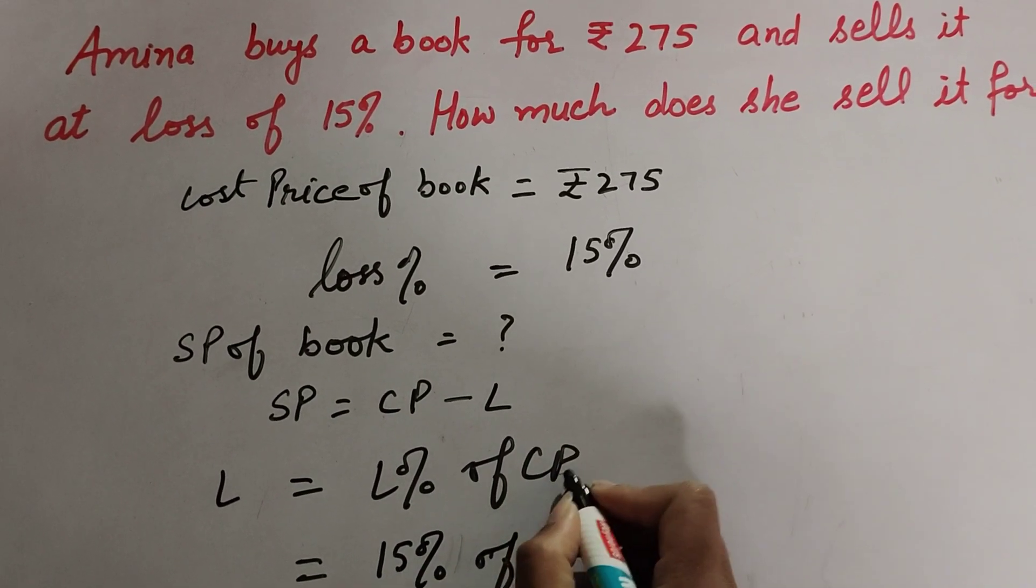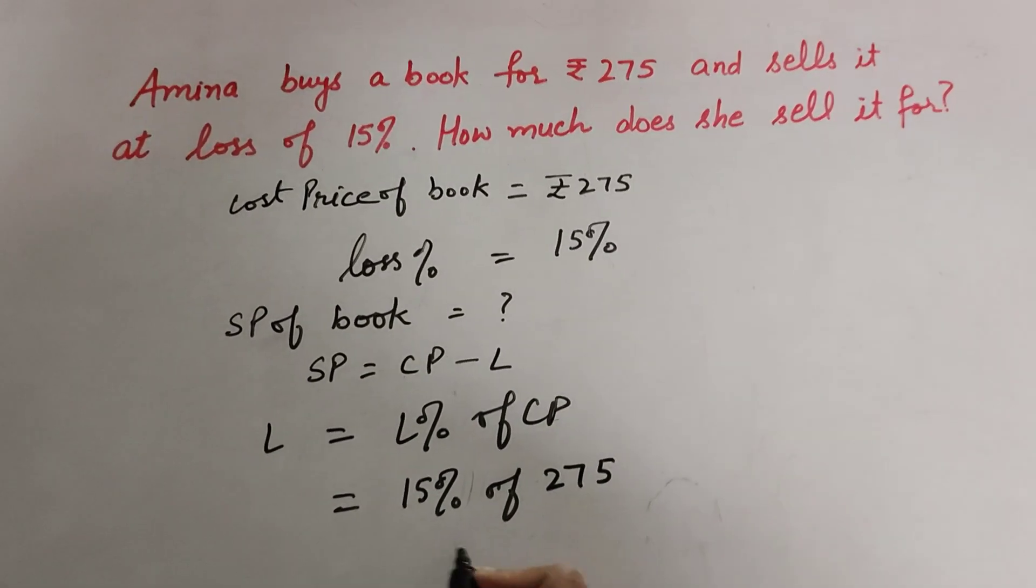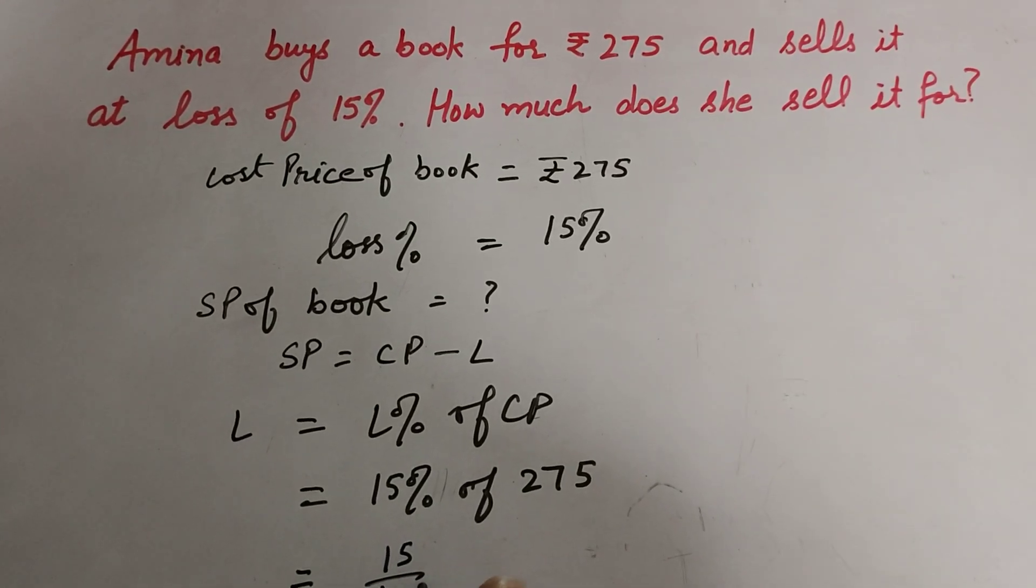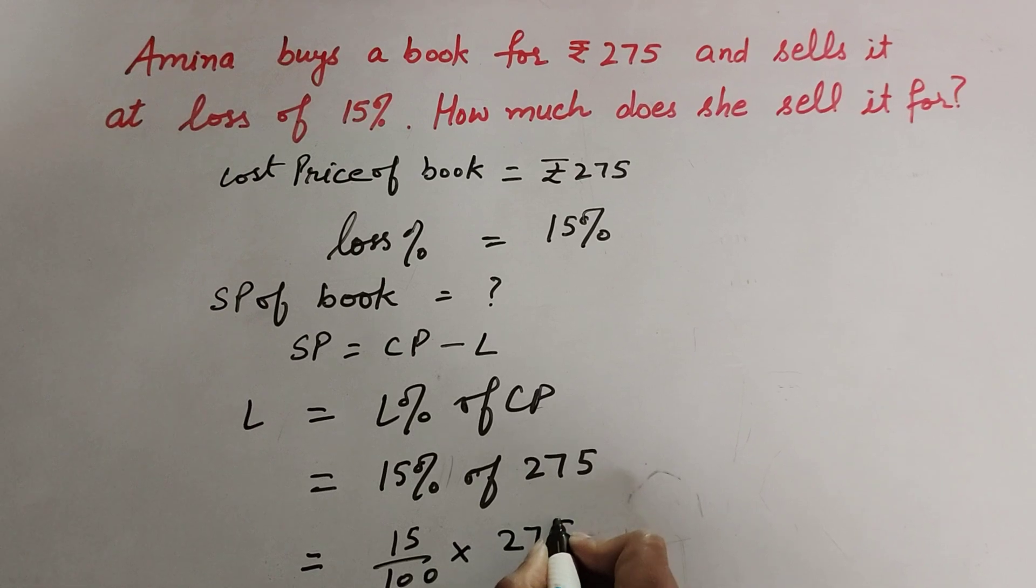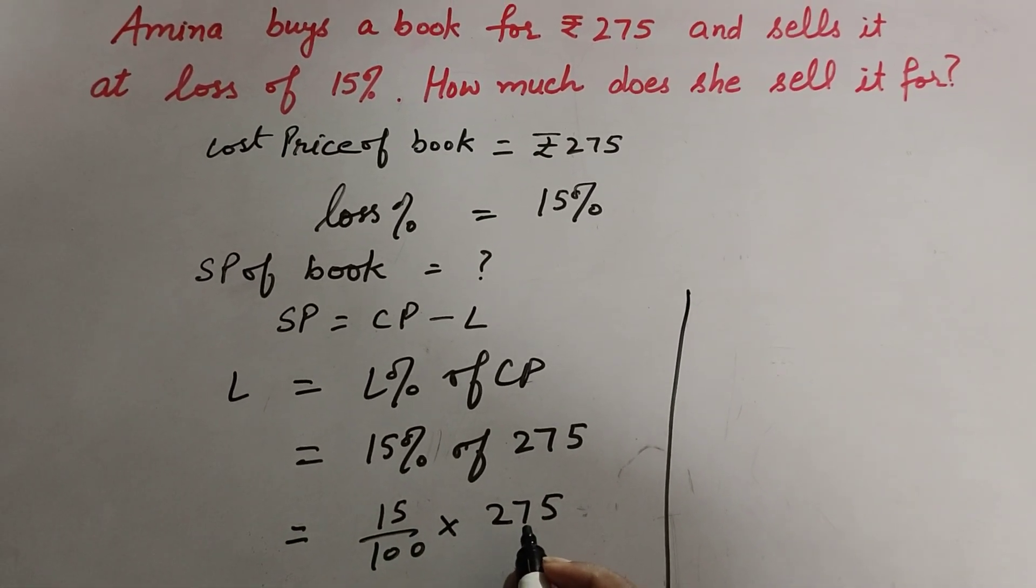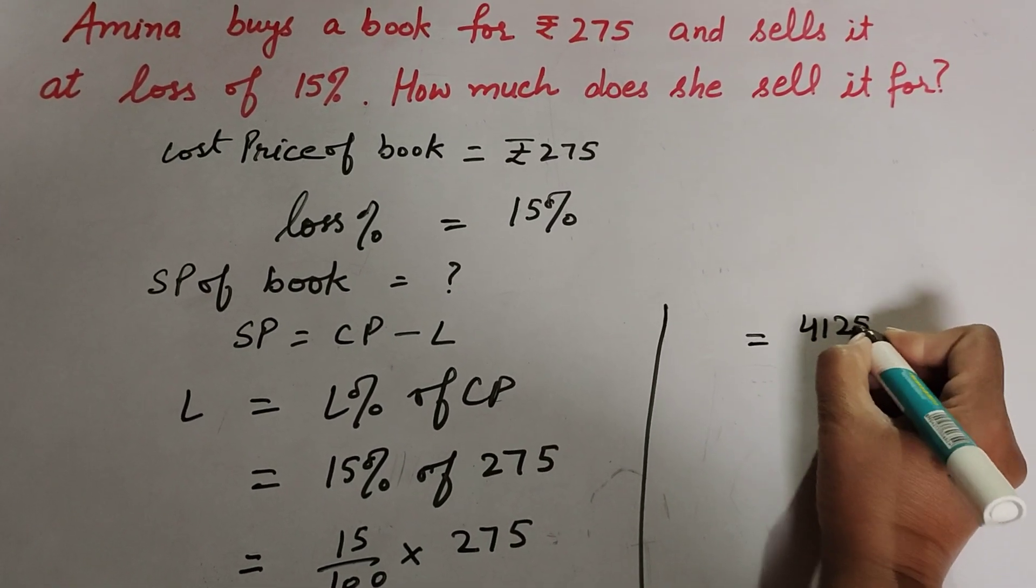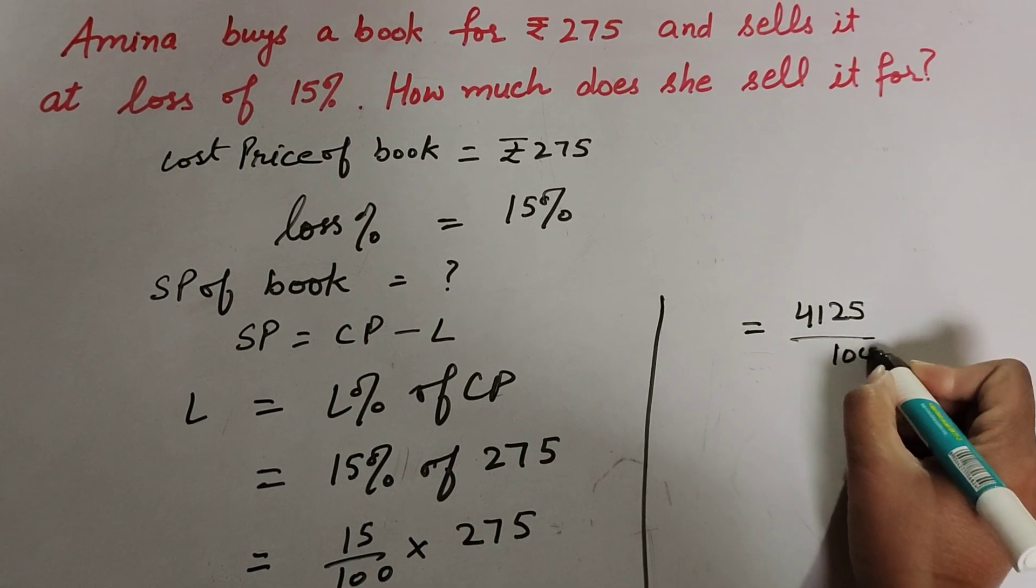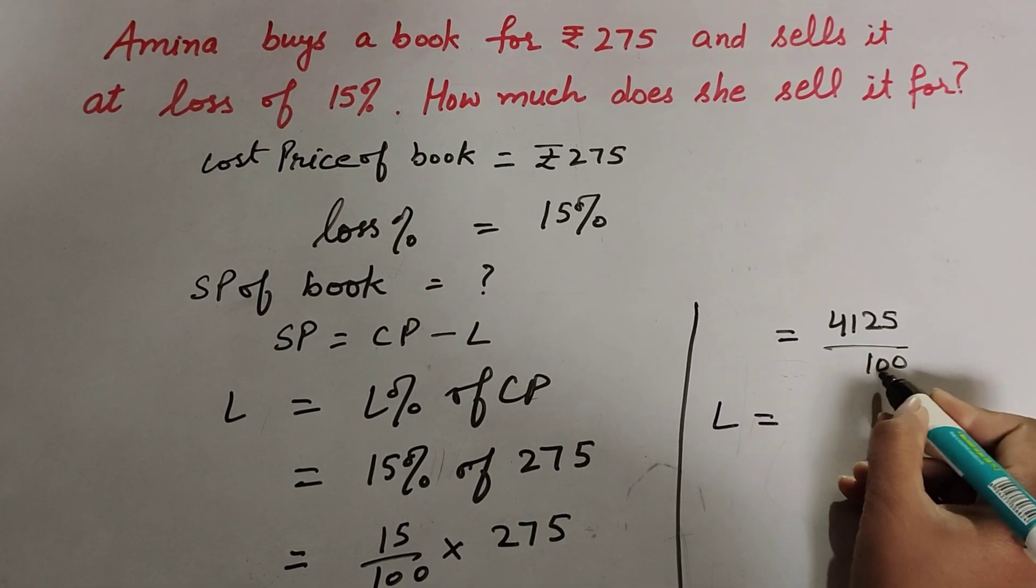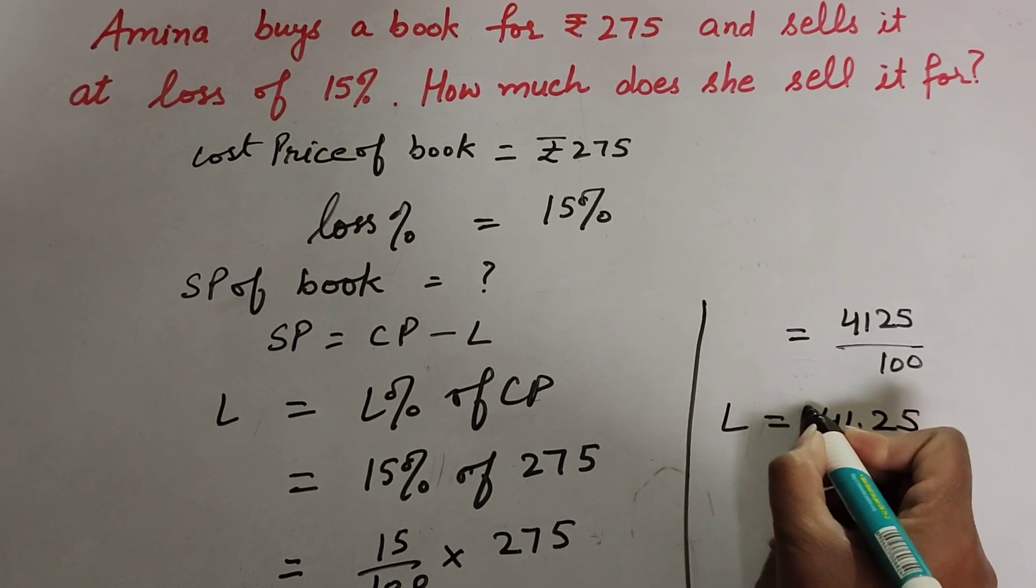Loss percentage is 15% of CP, which is 275. 15% equals 15 over 100, and of means multiply, so 15 multiply by 275. This equals 4125 over 100.